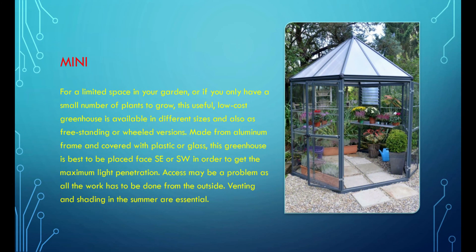For a limited space in your garden, or if you only have a small number of plants to grow, the mini greenhouse is useful. Low-cost greenhouses are available in different sizes and also as freestanding or wheeled versions. Made from an aluminum frame and covered with plastic or glass, this greenhouse is best placed facing south-east or south-west to get maximum light penetration. Access may be a problem as all the work has to be done from the outside. Venting and shading in the summer are essential.